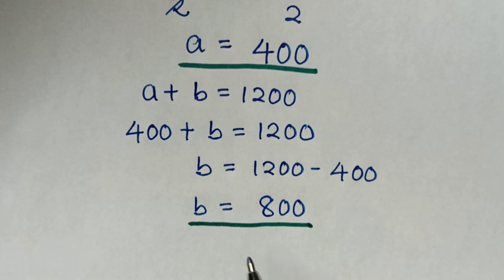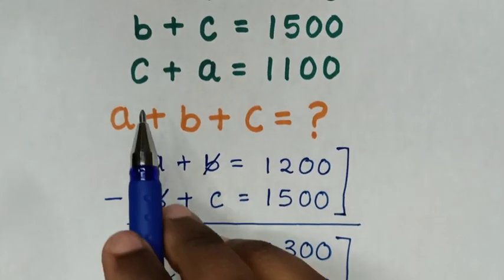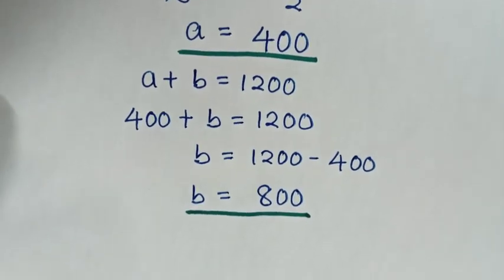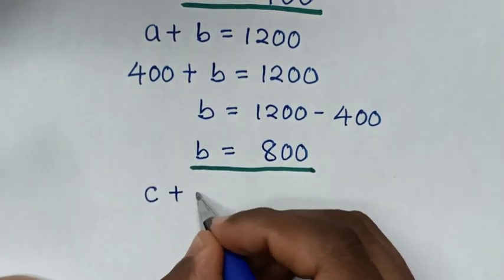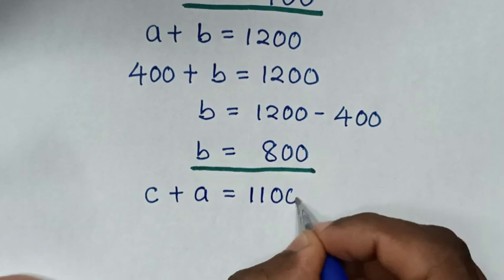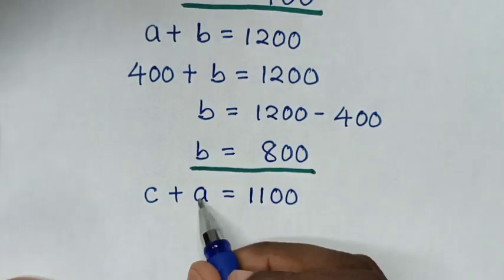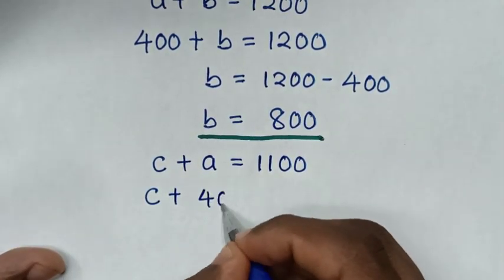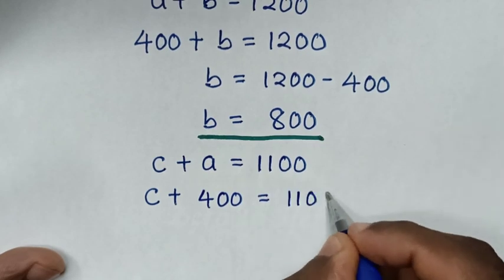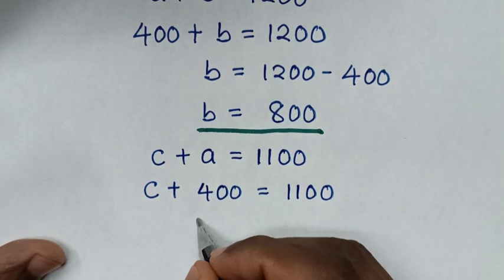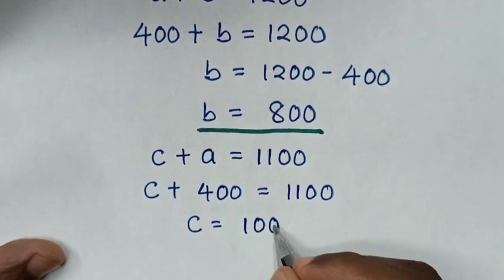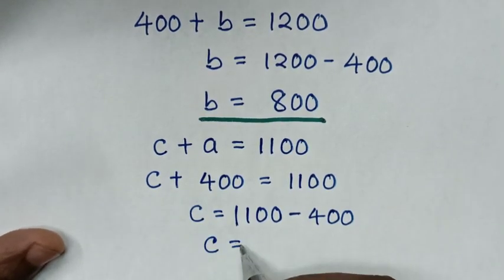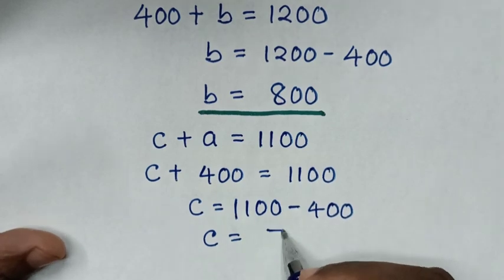Now to find the value of C, we use the third equation: C plus A equals 1100. Substituting A equals 400, we get C plus 400 equals 1100. Therefore, C is equal to 1100 minus 400, which is 700.